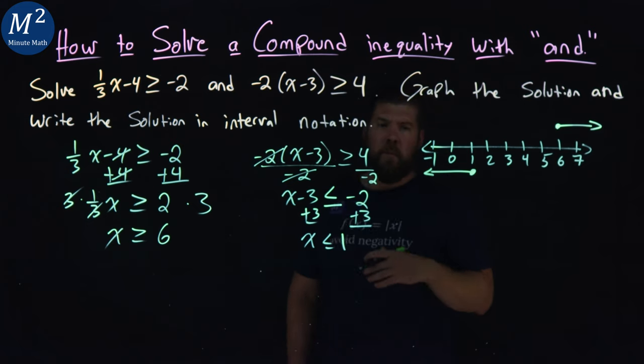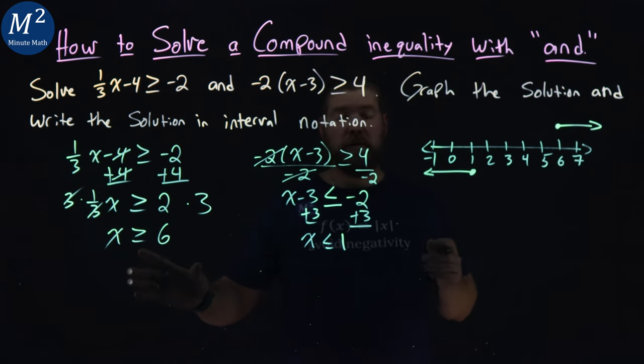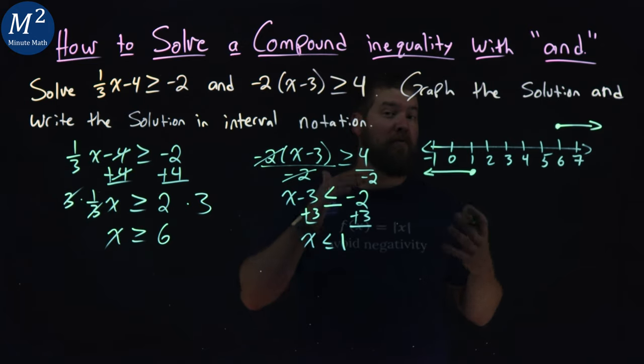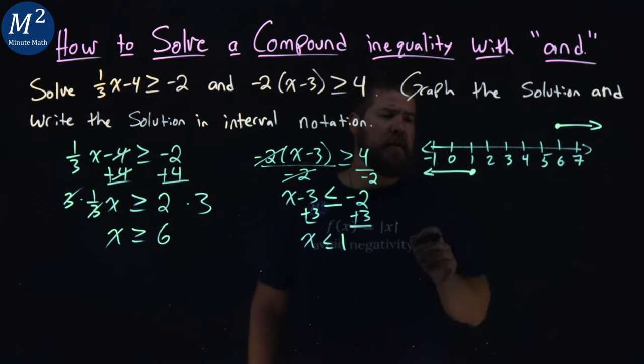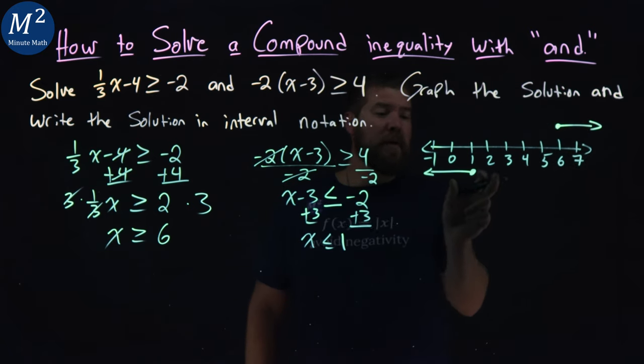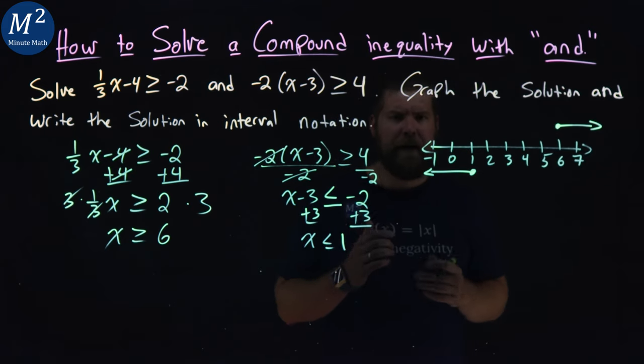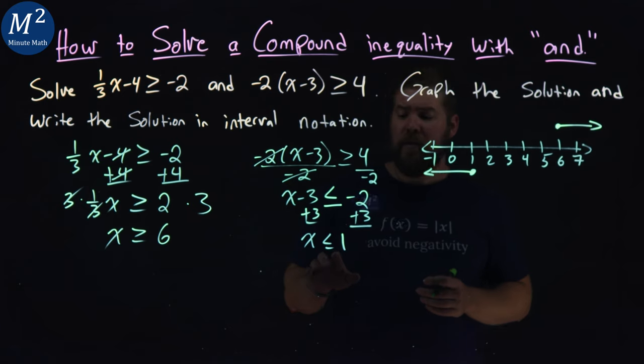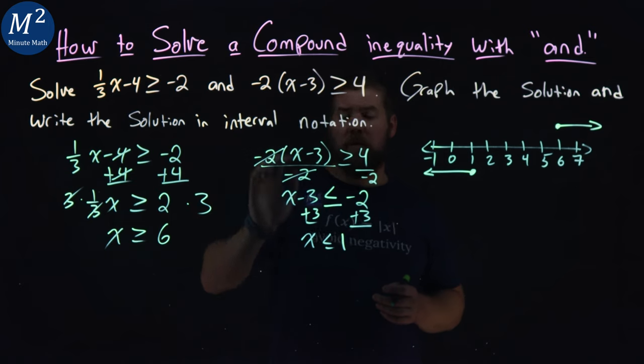Now this is where it becomes interesting. Normally we graph each inequality individually and combine them where they overlap - hence the 'and'. But notice here, there is no section where the first and second inequalities overlap. That means there is no number where they both work, where they're both true.